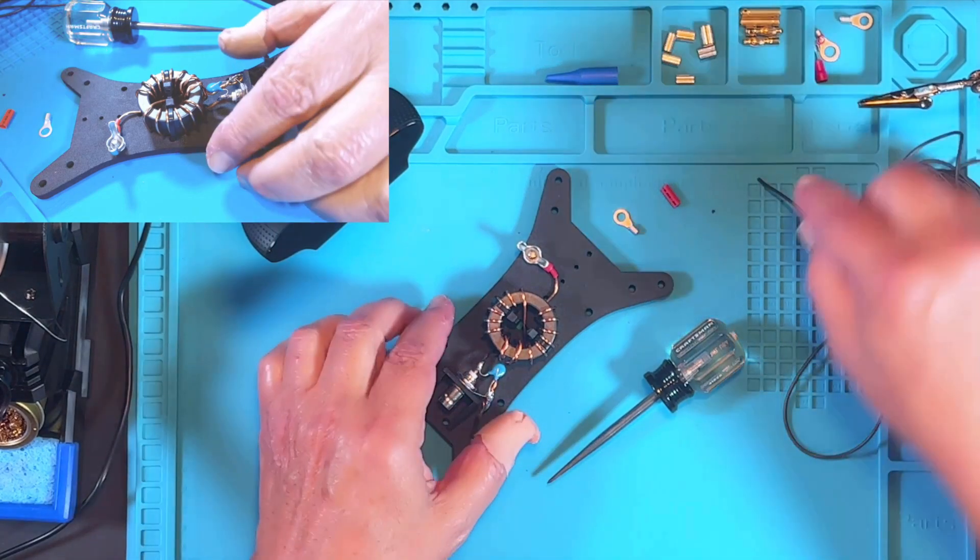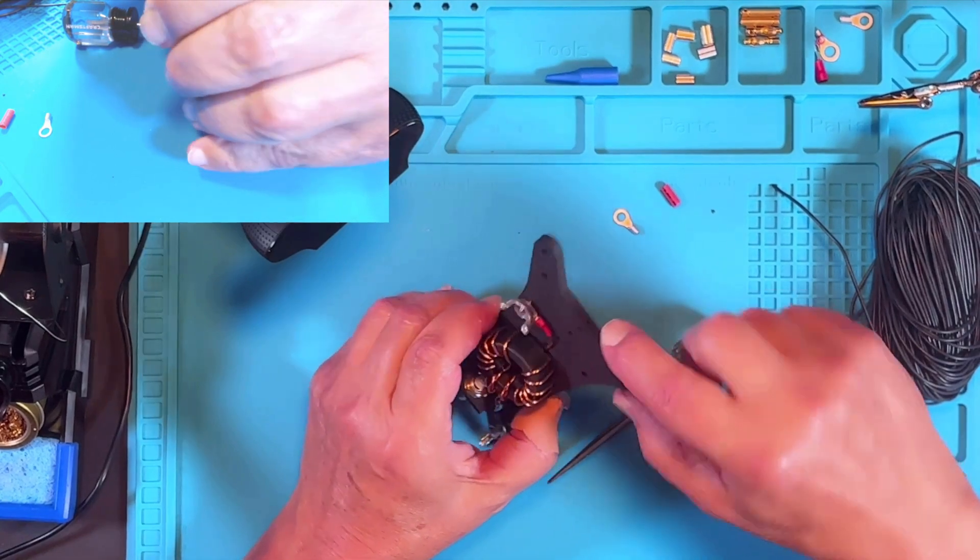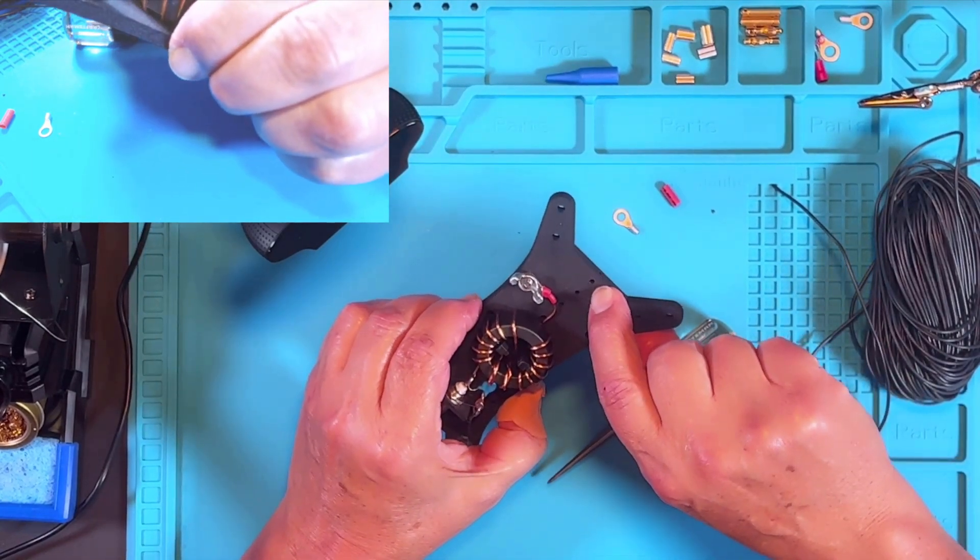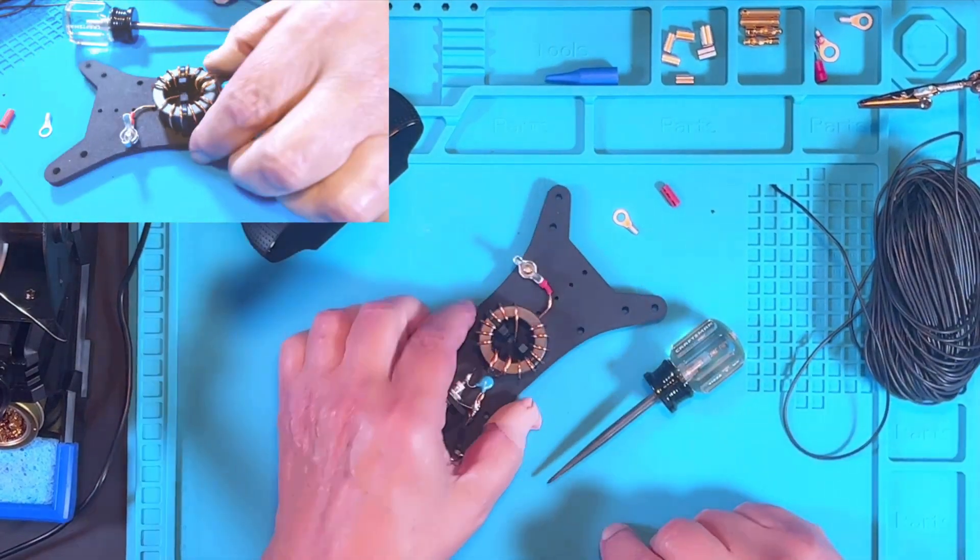Next up on our antenna build is to feed our wire through the end of the frame, push it down through this hole, pull it out the bottom, feed it up through the second hole, and give ourselves some strain relief here.